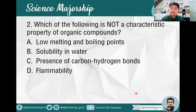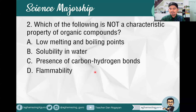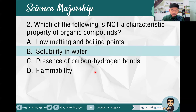Item number two: which of the following is NOT a characteristic property of organic compounds? A. Low melting and boiling points, B. Solubility in water, C. Presence of carbon-hydrogen bonds, or D. Flammability. The answer is letter B — solubility in water — which is not a characteristic property of organic compounds.